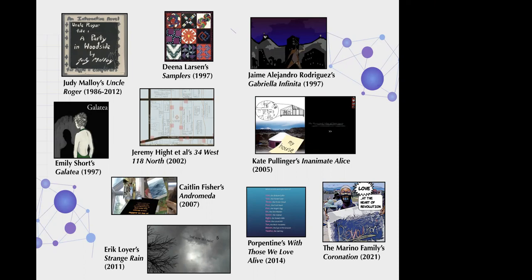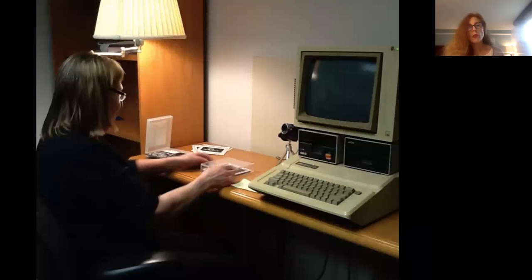So I'm going to start with Judy Malloy's Uncle Roger. It's a long form narrative referred to as a novel. It was first introduced in 1986 and republished in several different genres until about 2012. Because it's been published on six different platforms and six different genres, it makes for a really fascinating study of genre and digital storytelling. Here's an image of Judy sitting in front of the Apple IIe during a traversal that Stuart Moultrop and I did at Princeton, where she was working back in 2013.